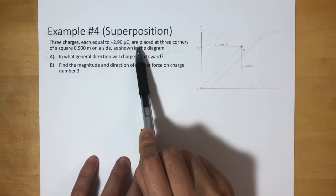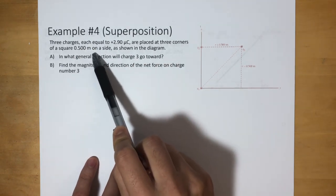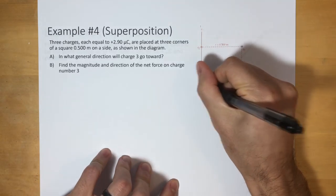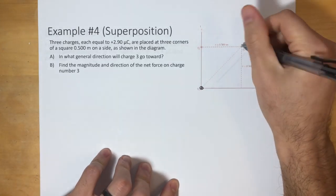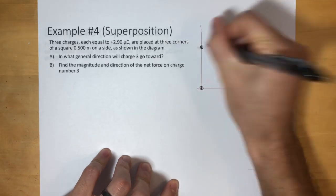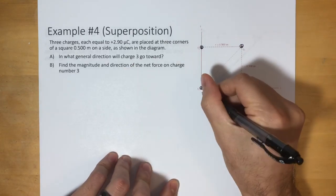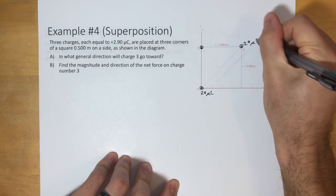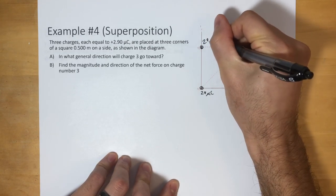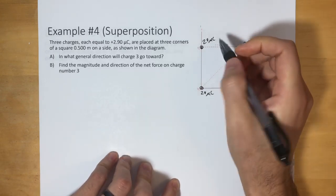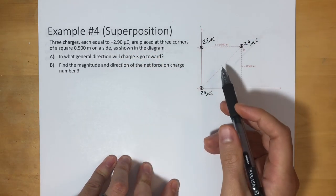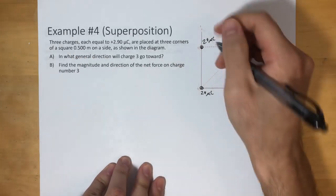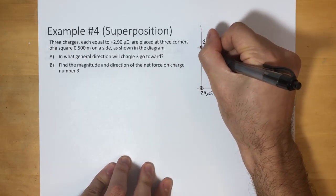Three charges equal to 2.9 micro coulombs — that's 10 to the negative 6 coulombs — are placed at three corners of a square 0.5 meters on each side. They're all positive: 2.9 micro coulombs, 2.9 micro coulombs, and 2.9 micro coulombs. This side is 0.5 meters.